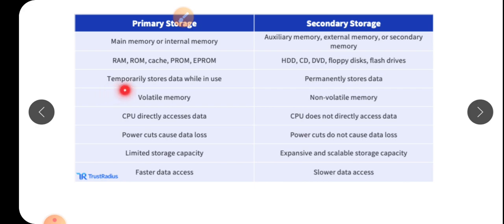Primary memory temporarily stores data while in use. RAM and ROM store data temporarily — when the power goes, this information vanishes from the computer and you cannot recollect it. Whereas secondary memory permanently stores data — once you store something there, your data remains whether the power goes or not, and you can retrieve it again.